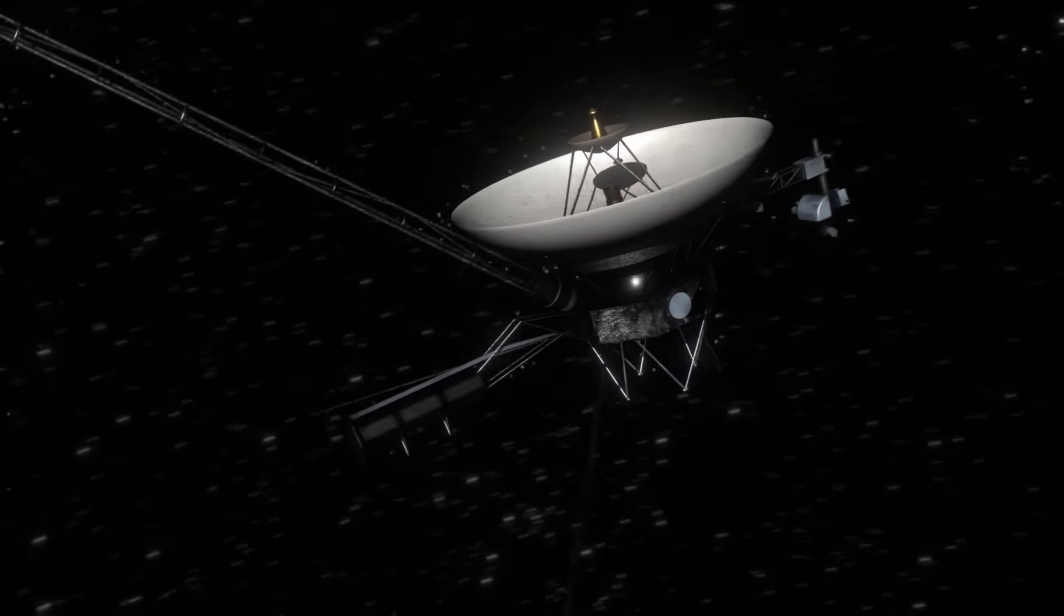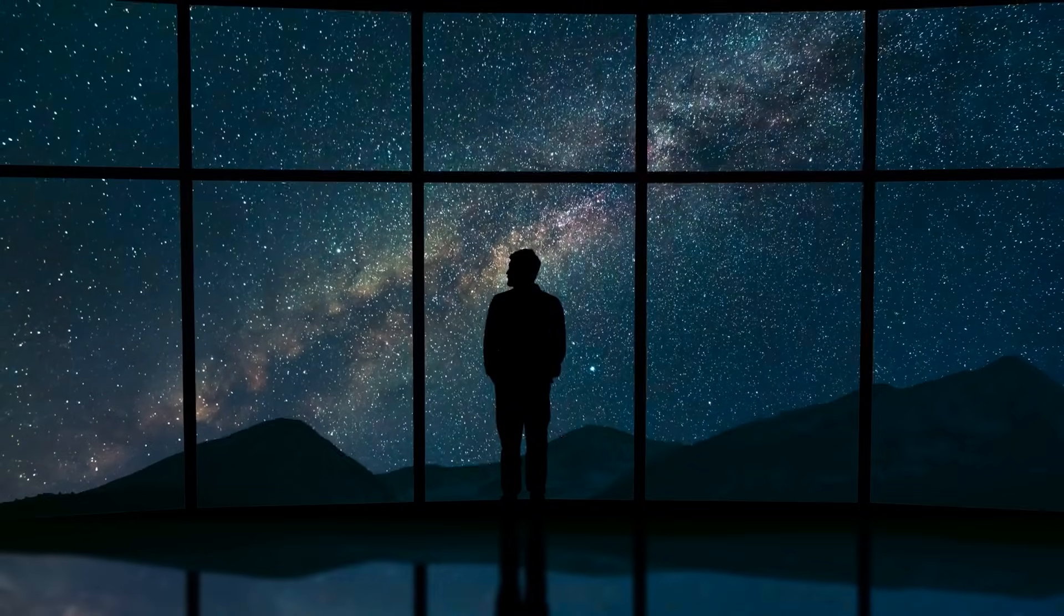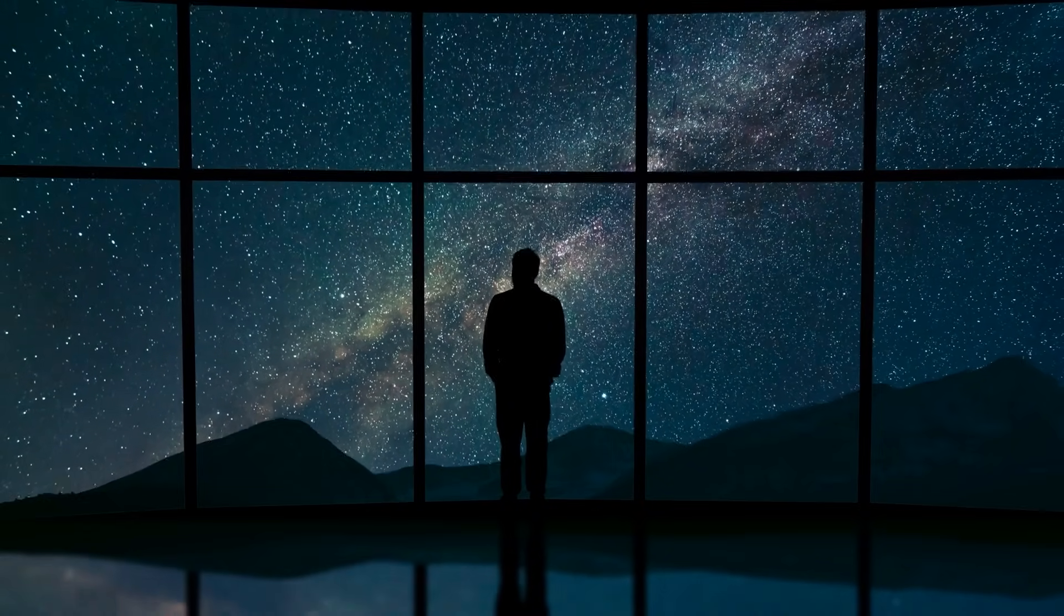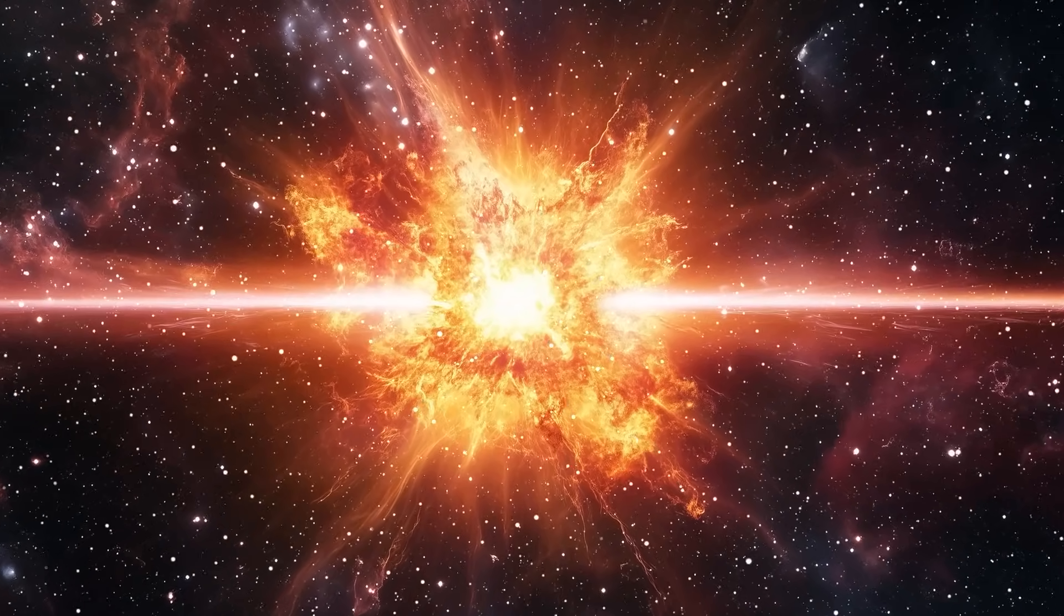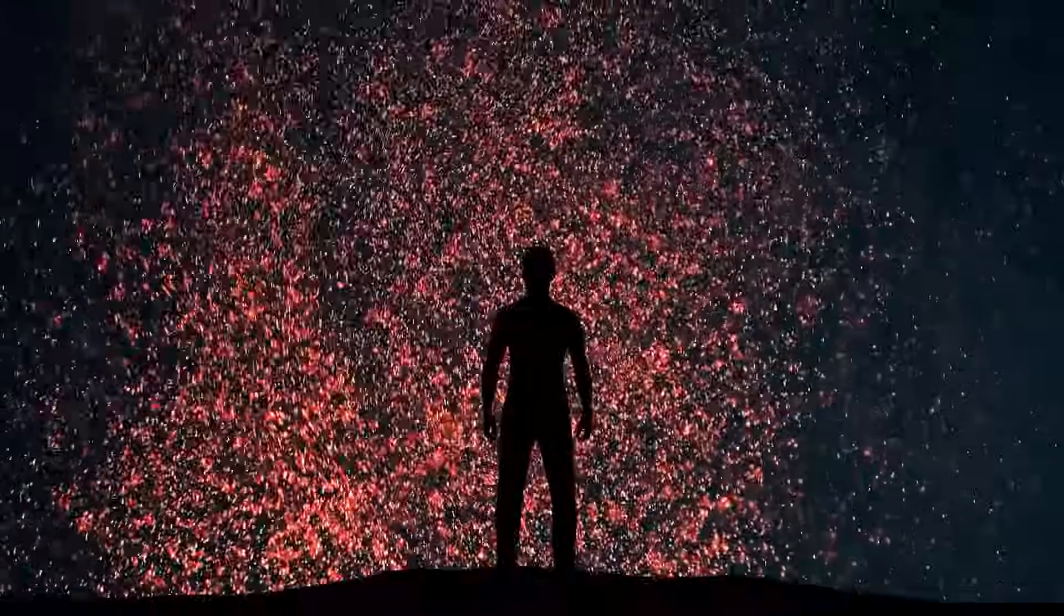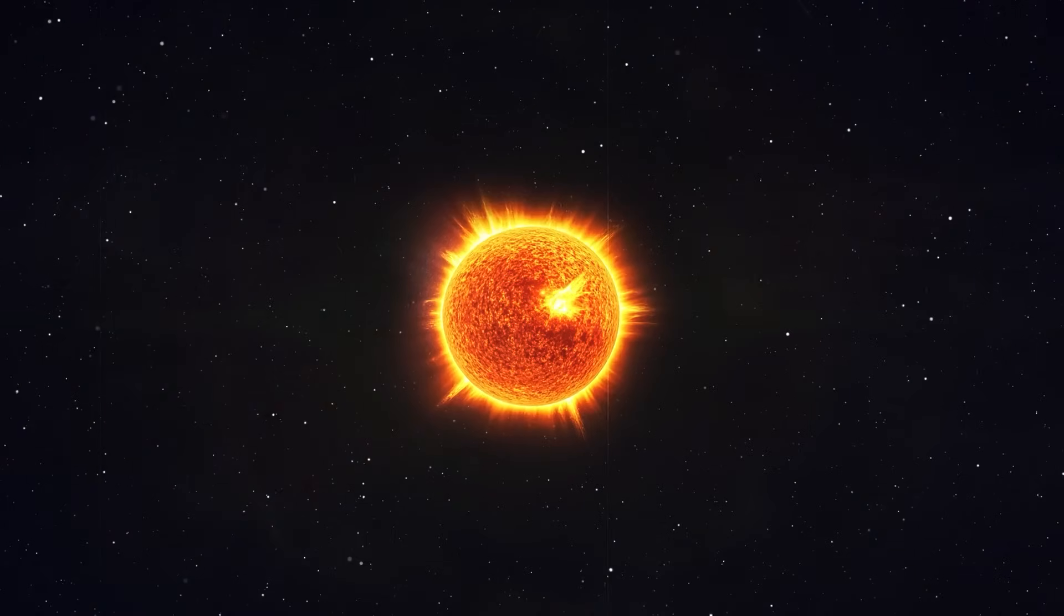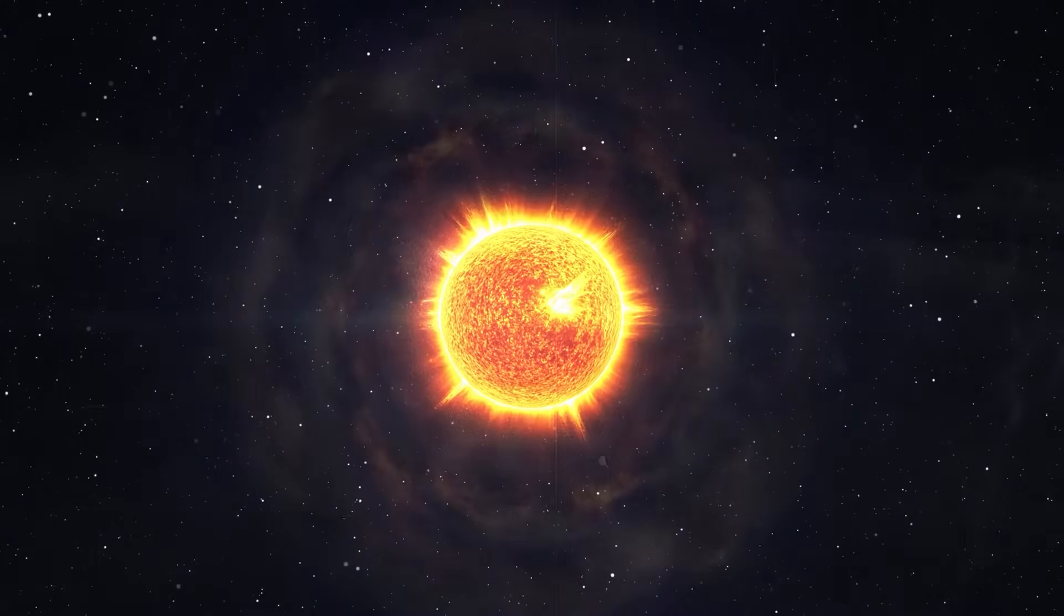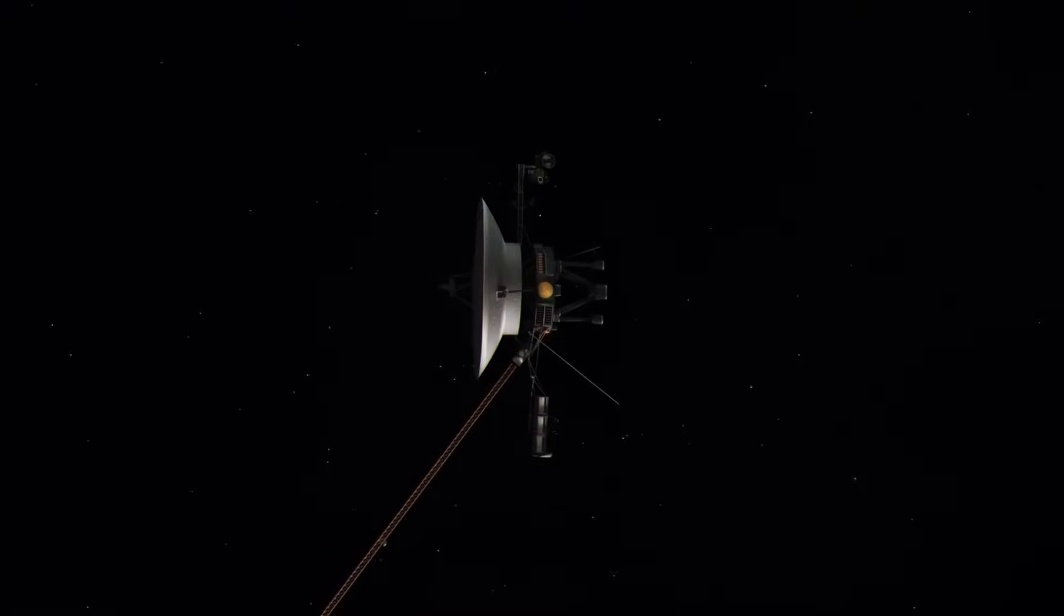The moment Voyager 1 left the Sun behind was in August 2012. The probe was the first man-made object to break through the invisible boundary where the Sun's influence ends and the interstellar medium begins. The expectations were clear: a smooth transition, a gradual decrease in solar activity, followed by a new environment. But what the probe recorded was anything but calm.